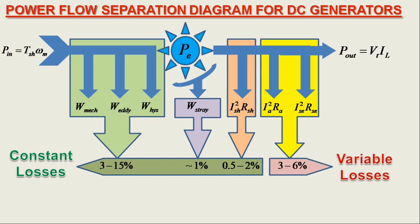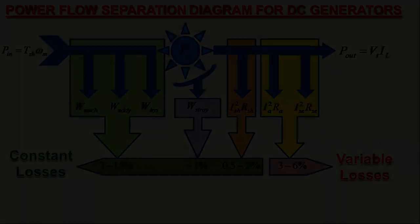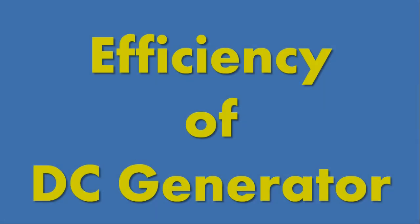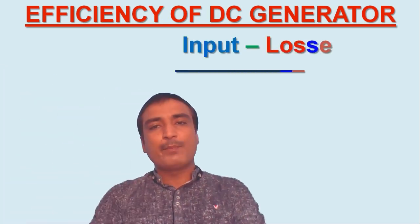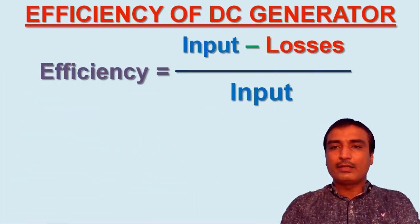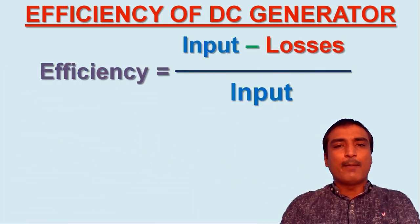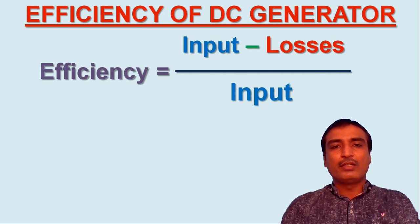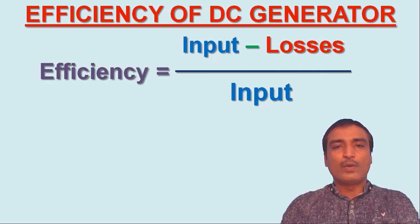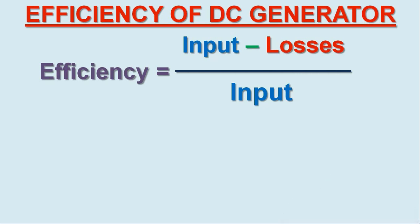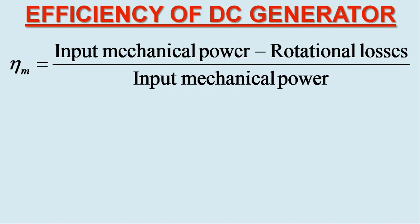So let us now understand the efficiency of the DC generator. In view of the first partition in the power flow separation diagram for DC generator, we may define the mechanical efficiency using the equation: efficiency equals input minus losses over input. We have mechanical efficiency equals input mechanical power minus rotational losses over input mechanical power.